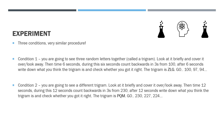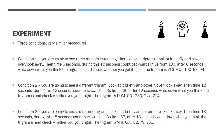Last one - you should have noticed the trend by now. Count backwards in threes from a different number for 18 seconds this time. Count backwards in threes from 82, and the trigram is V, H, J. Go: 82, 79, 76... Stop - should have had V, H, J. Write it down.